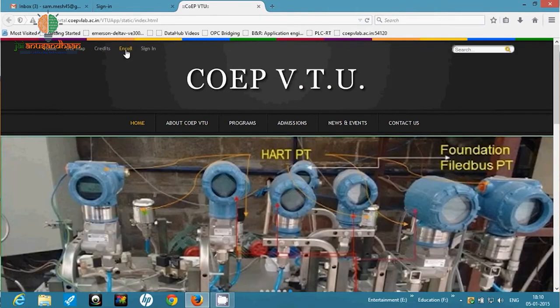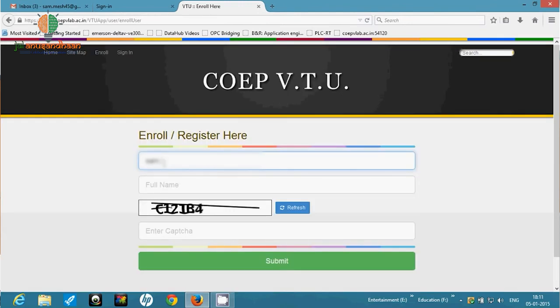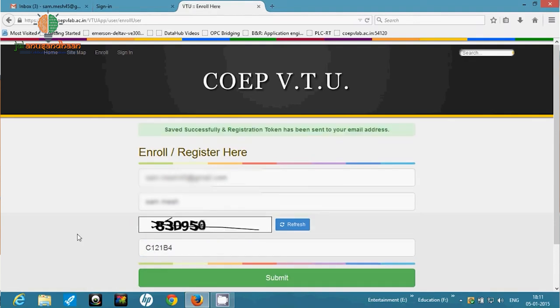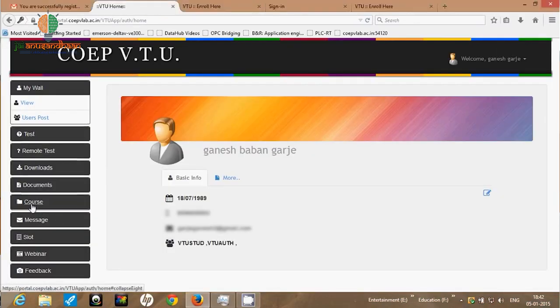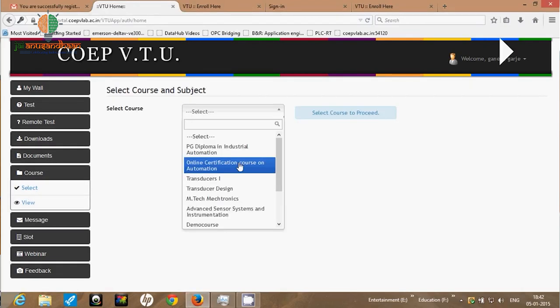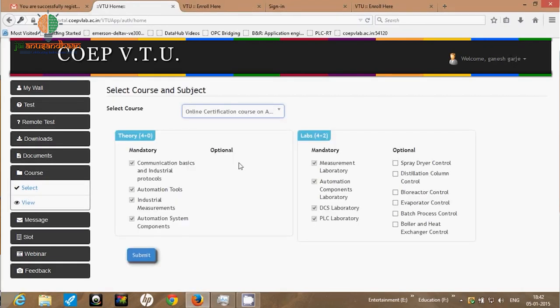Then after successful registration, you have to put your login ID and password. Once you successfully login inside the portal, you need to add the course which are there. Select the course. The courses are online certification for automation. You can add the course to your account.